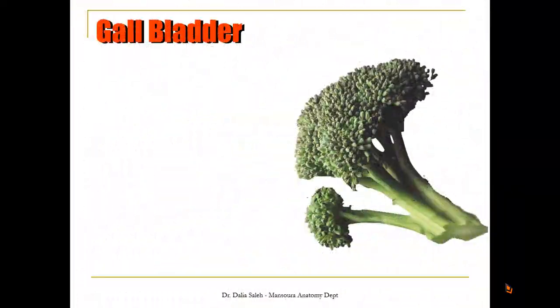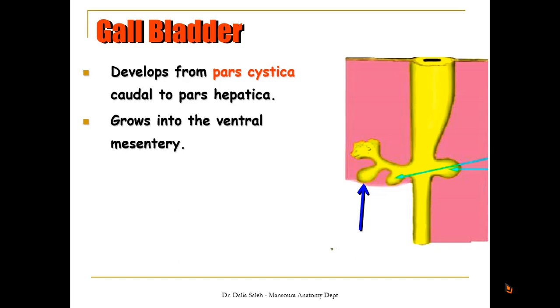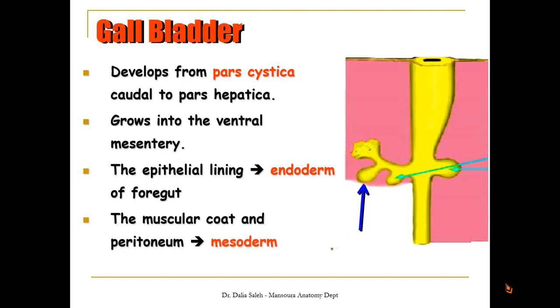For the development of the gallbladder, the larger cranial part of the liver bud will form the pars hepatica or hepatic part, while its smaller caudal part will form the pars cystica or cystic part. So the gallbladder develops from the pars cystica, which lies caudal to the pars hepatica. It grows into the ventral mesentery, so its epithelial lining is derived from the endoderm of the foregut, while its muscular coat and peritoneum are derived from the mesoderm of the ventral mesentery.